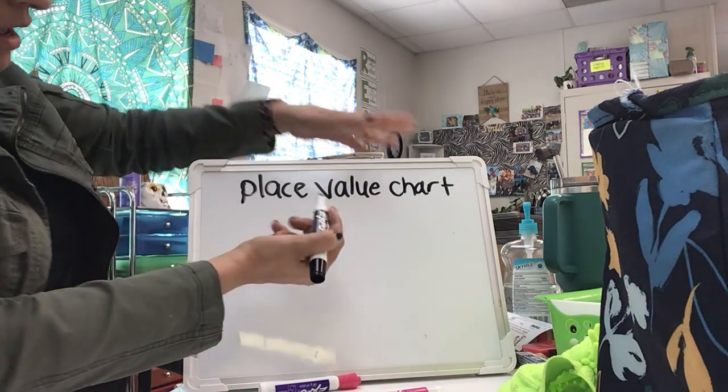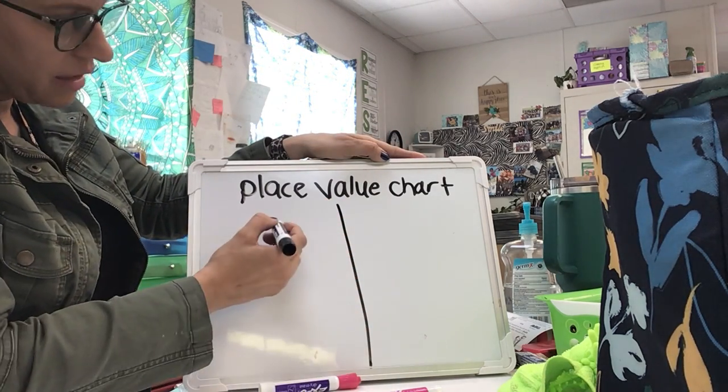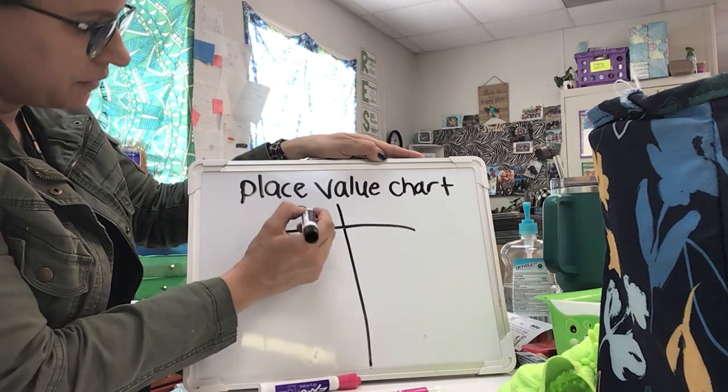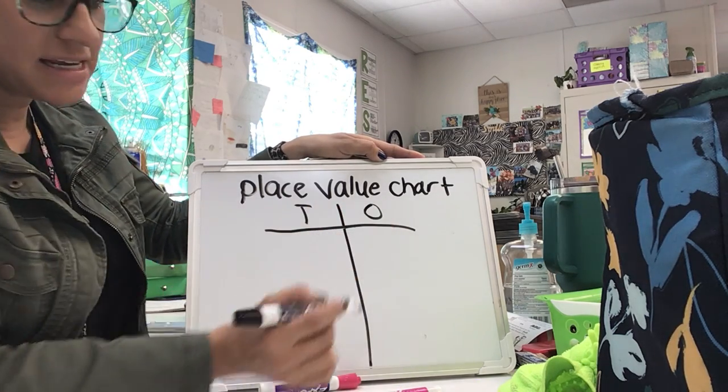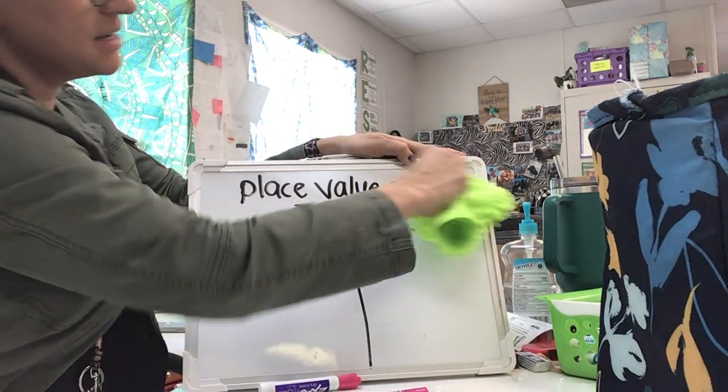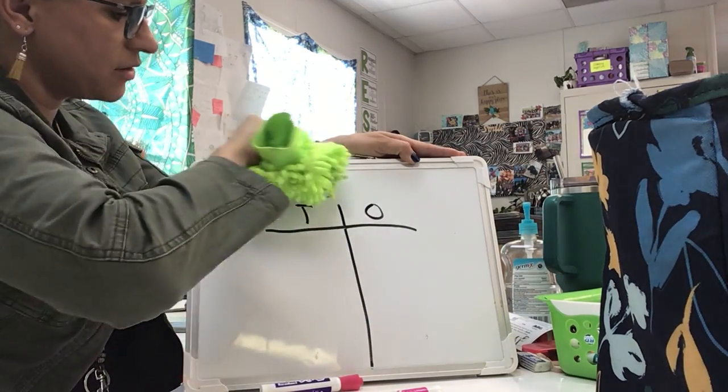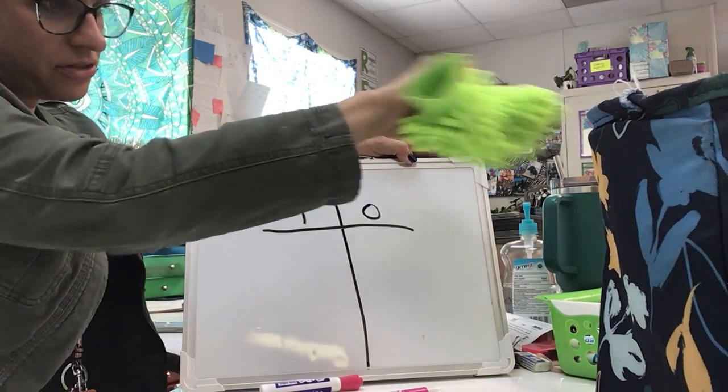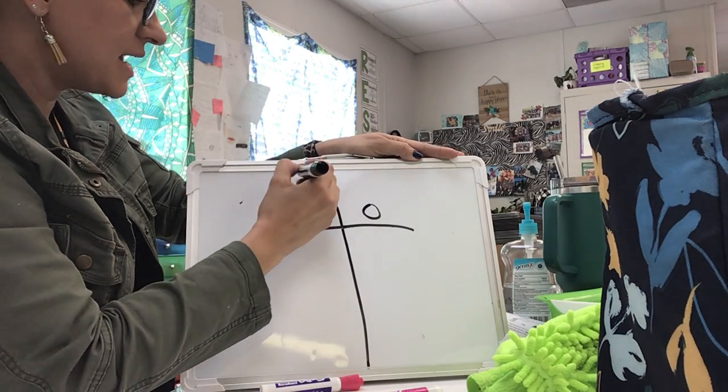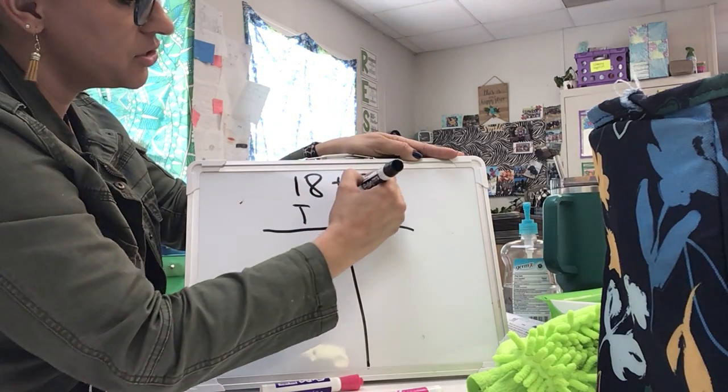So for a place value chart, you're going to just draw a line straight down the middle of your paper. One side is the T, one is the O. That stands for tens and ones. At the top, I always like to put my equation, and we're going to start with the equation 18 plus 24.